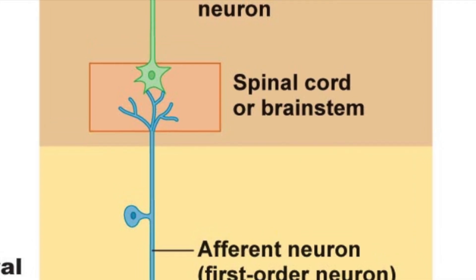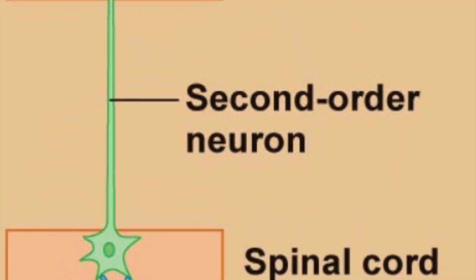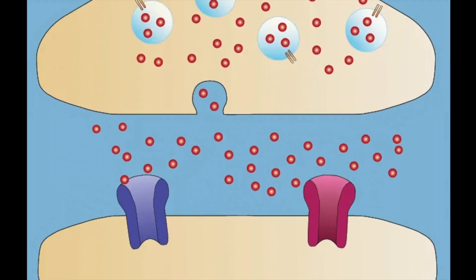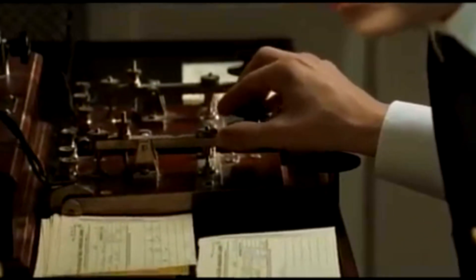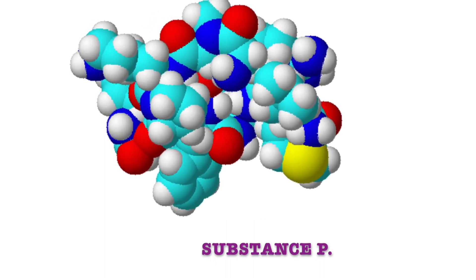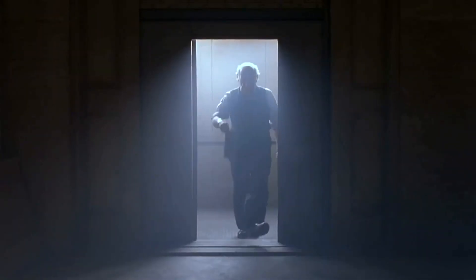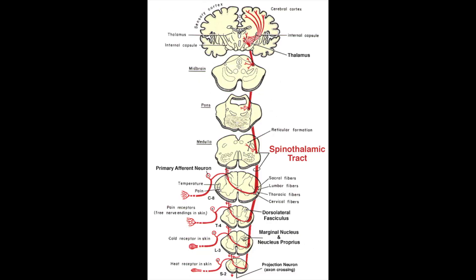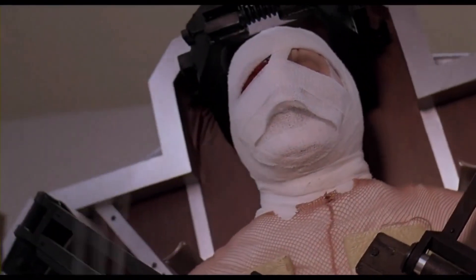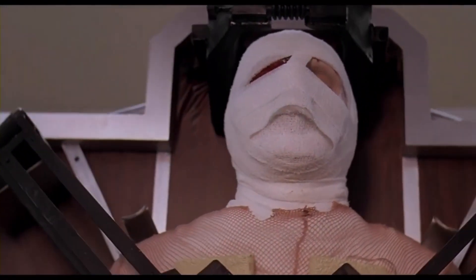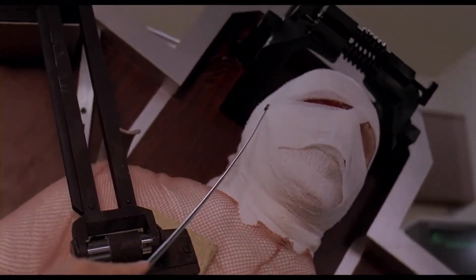Once inside the spinal cord, the first-order neuron will synapse - that's street slang for connect - to a second neuron, smartly called a second-order neuron. In the synaptic cleft, or space between two neurons, the first-order neuron will communicate the information to the second-order neuron by releasing chemicals, especially the main pain neurotransmitter: substance P. The information-loaded second-order neurons will then bring the signal directly to the brain through the spinothalamic tract.